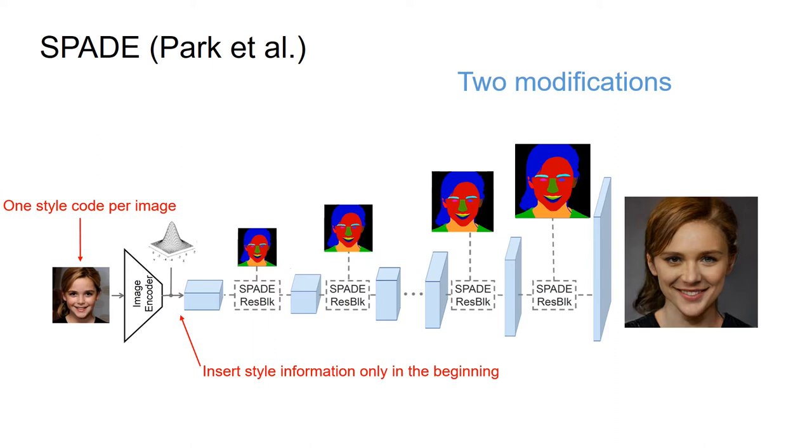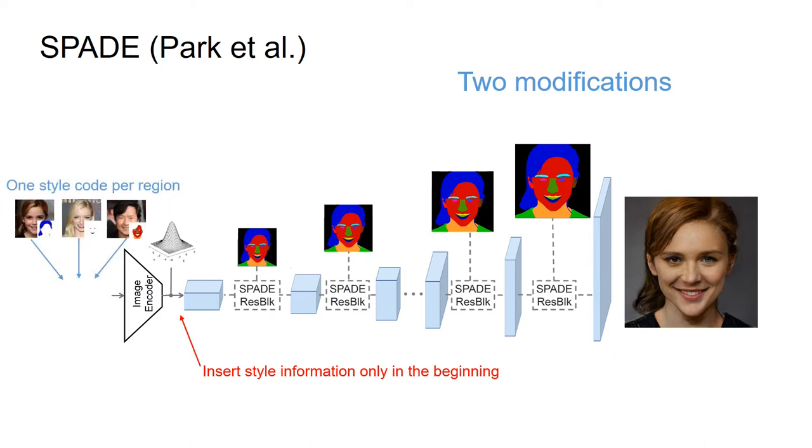Correspondingly, we propose two modifications on SPADE. First, use one style code per region rather than one style code per image. Second, inject style information at multiple locations in the architecture instead of only at the beginning.